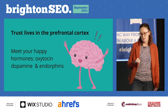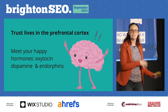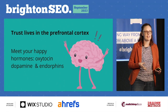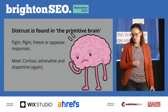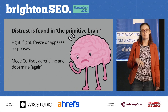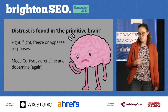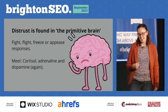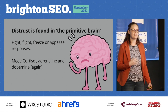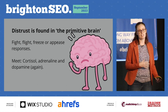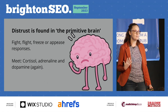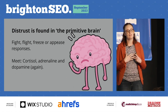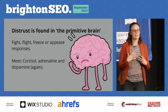You might think that distrust is just the opposite of trust — that if those hormones aren't being released, distrust is simply the reverse. But not quite. Distrust is found in a completely different area of the brain: the primitive brain, the amygdala. It's actually the fight, flight, freeze, or appease response that happens when you're starting to feel distrust. The hormones that release are cortisol, adrenaline, and dopamine again, but it works slightly differently. And that closes you off — every time you feel distrust, you take a step back and feel protected.